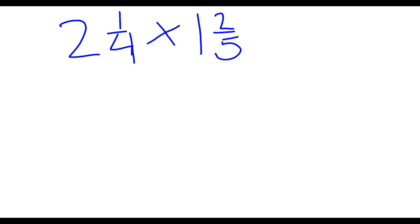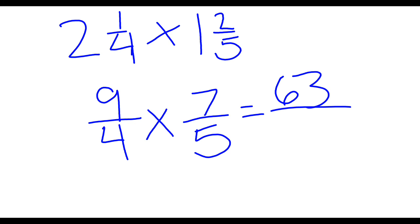So to do that, I multiply the whole number times the denominator and add the numerator. So 2 times 4 is 8 plus 1 is 9, and the denominator stays the same, times 1 times 5 is 5, plus 2 is 7. So we've got 9 fourths times 7 fifths. And then we just multiply across the top like we've been doing. So 9 times 7 is 63, and 4 times 5 is going to be 20.